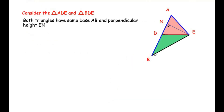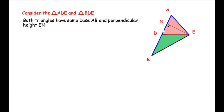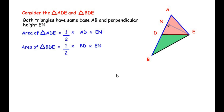Now we are going to break the triangle into two parts. Consider triangle ADE and triangle BDE from the part ABE of the original triangle — I have given two different colors for the two triangles. Both triangles share the same base and rest on base AB, and they both have a common perpendicular height which is EN. The area of triangle ADE is one-half times base AD times height EN, and the area of triangle BDE is one-half times base BD times height EN.